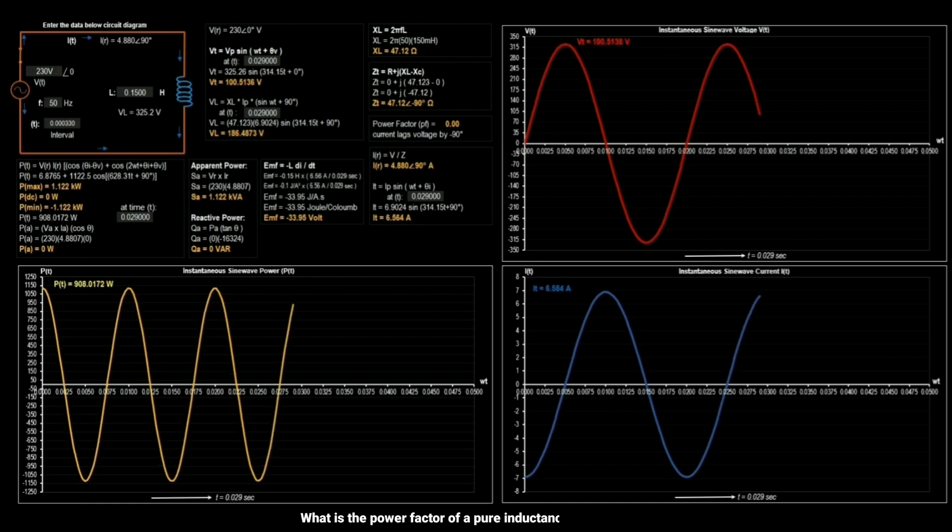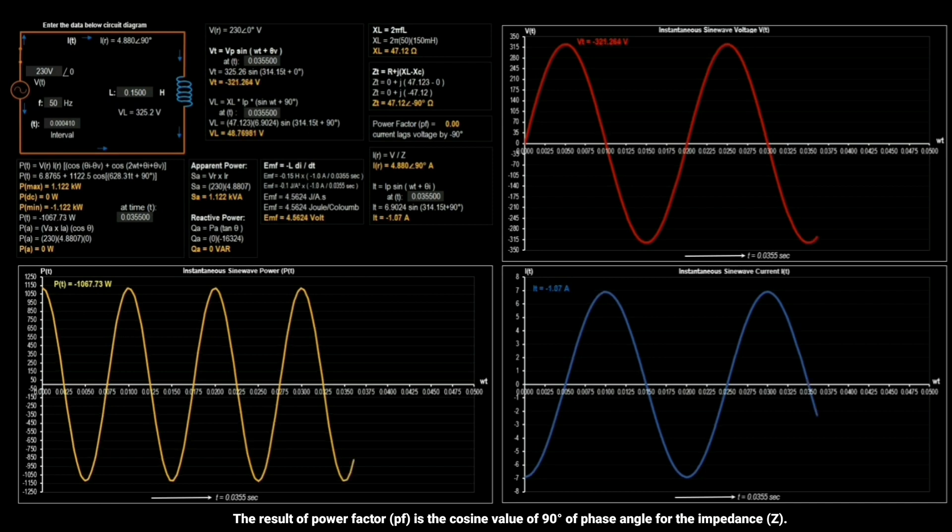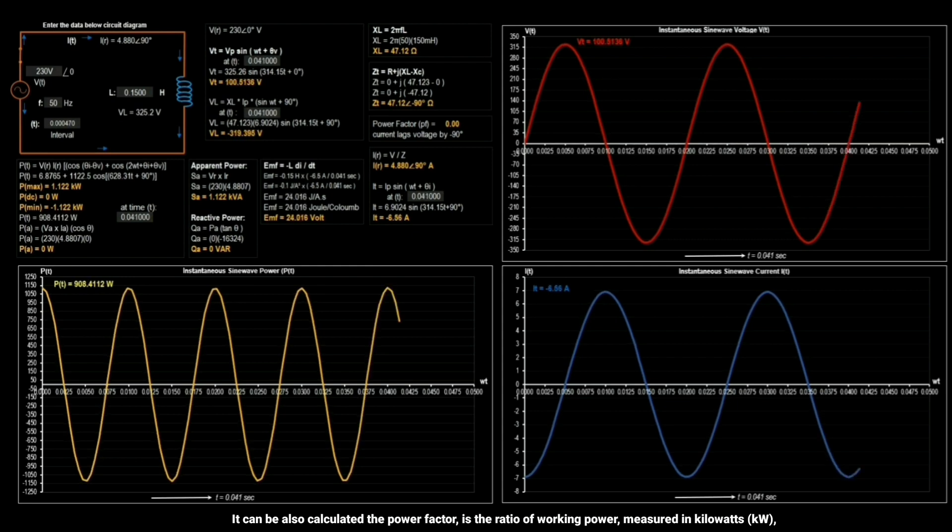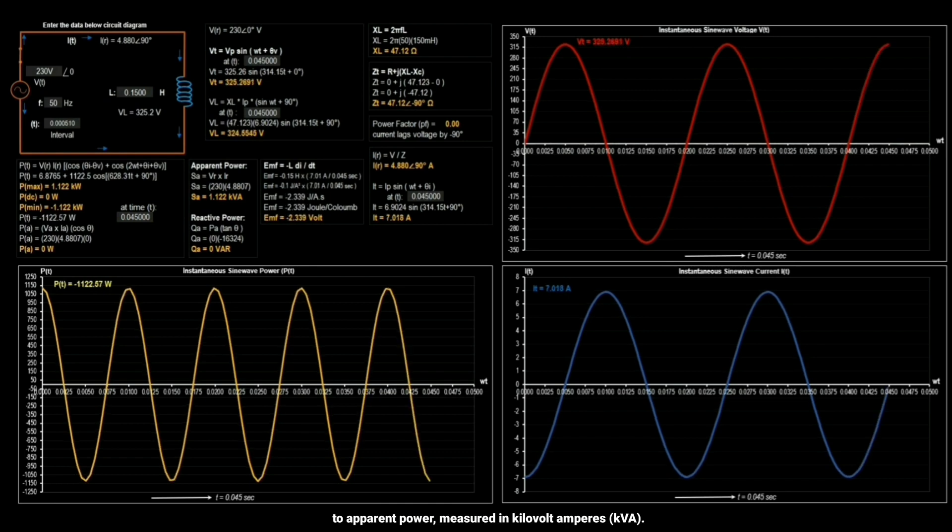What is the power factor of a pure inductance in AC circuit? The result of power factor is the cosine value of 90 degrees of phase angle for the impedance. It can be also calculated the power factor is the ratio of working power measured in kilowatts to apparent power measured in kilovolt amperes.